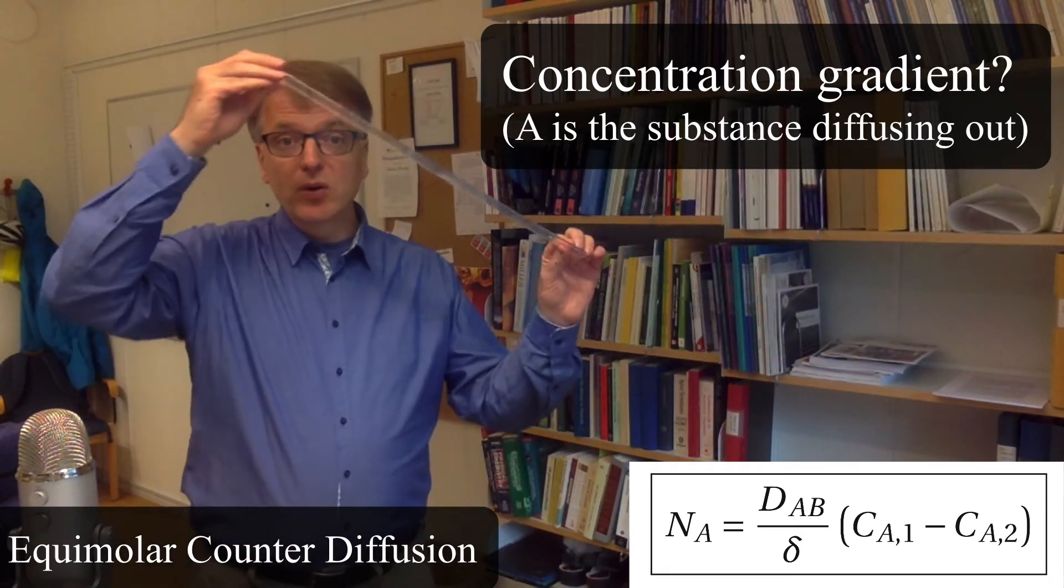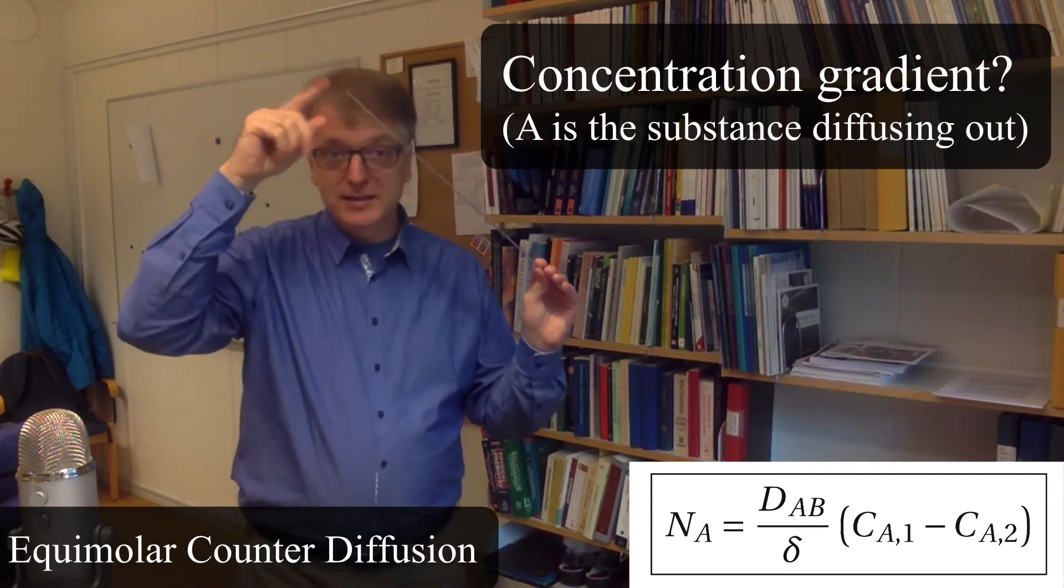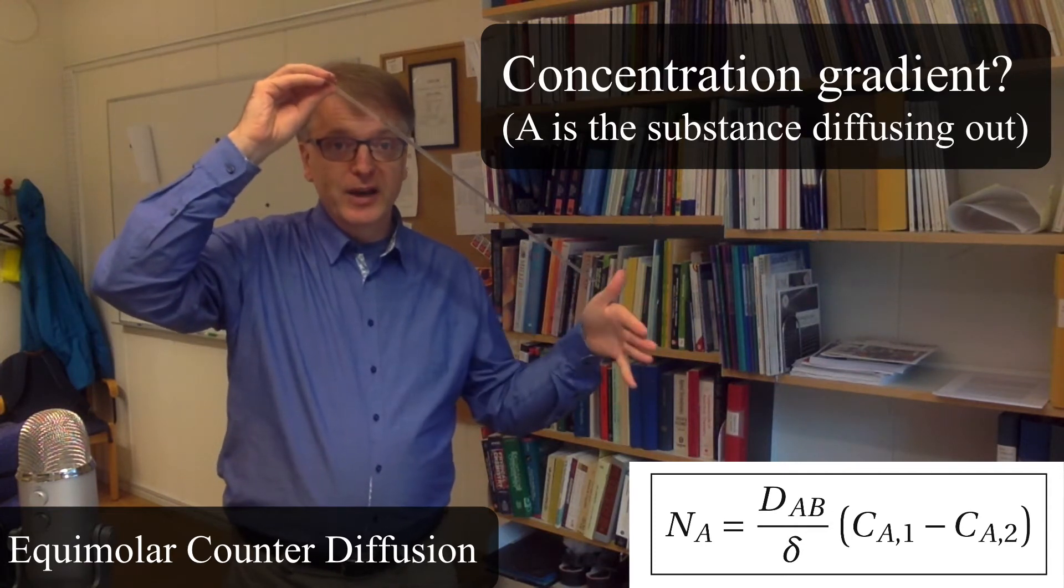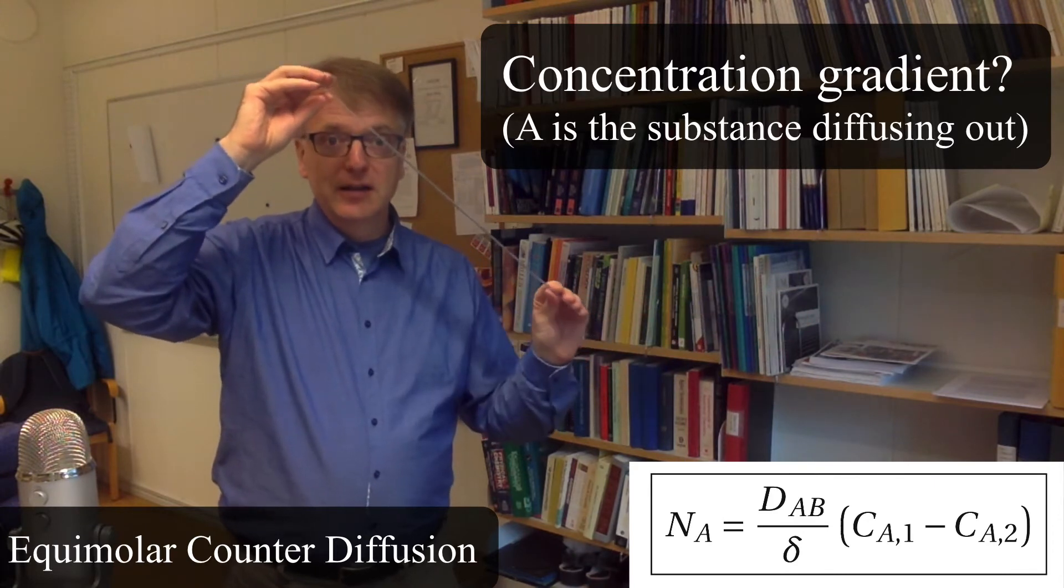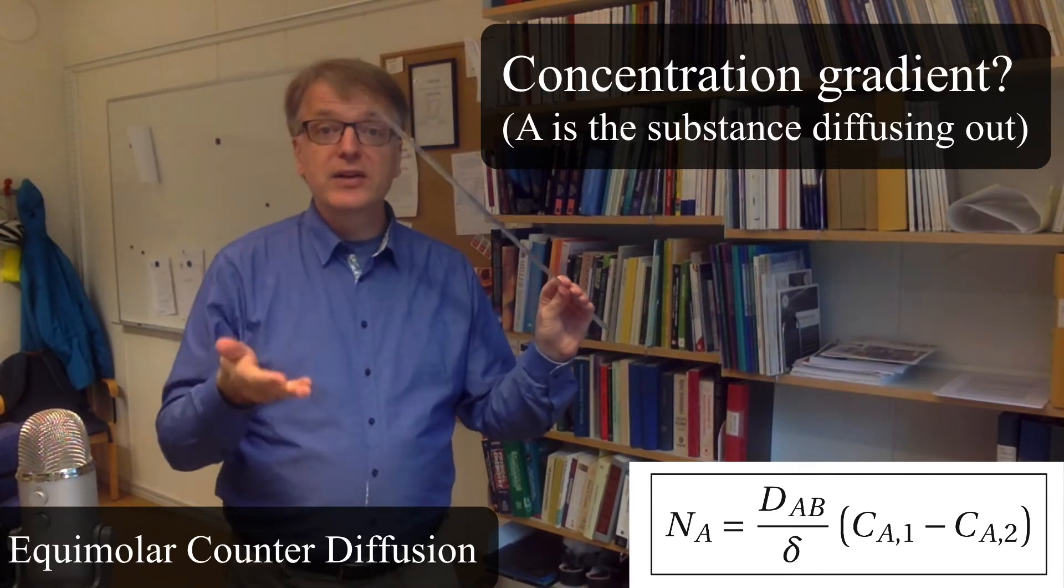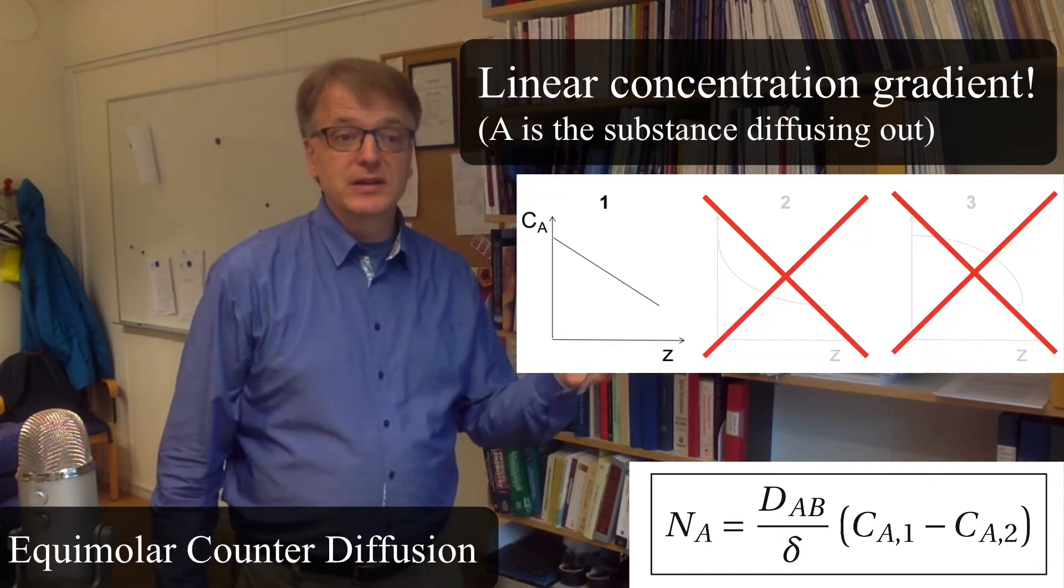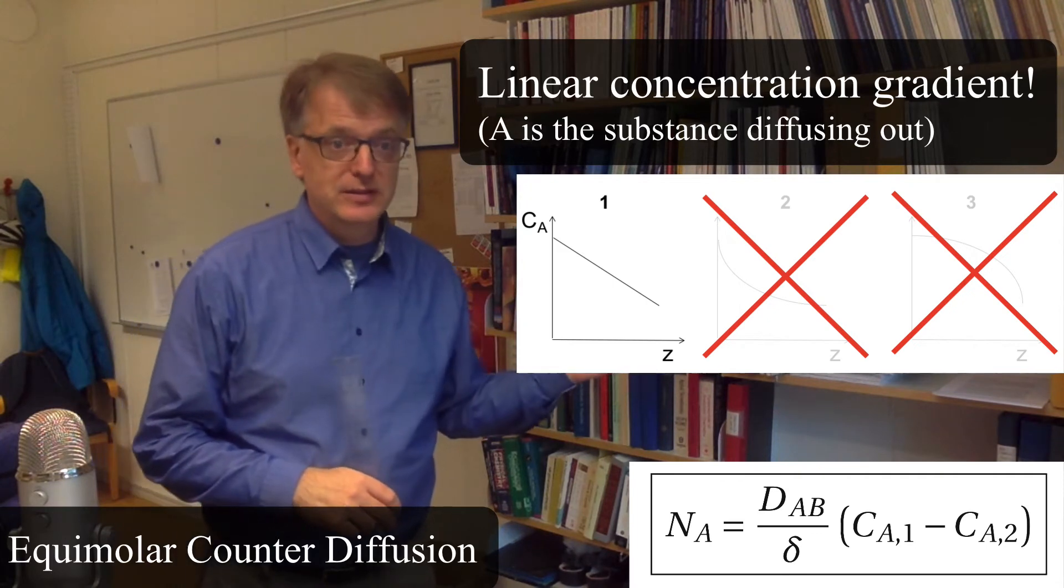So the concentration gradient must be linear. We know that in this case we have 100% bromine gas somewhere in this container and then zero in the surrounding air. As it's a linear equation, the concentration gradient must be linear. There is no other way. So options two and three disappear - that's not possible.